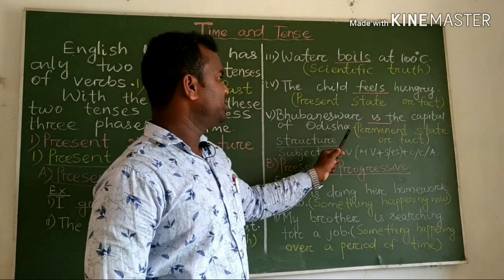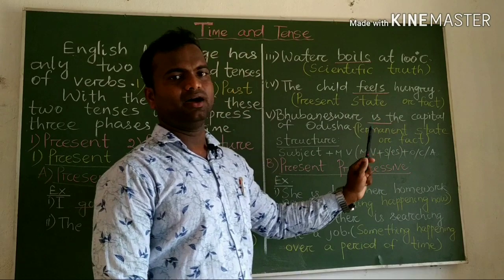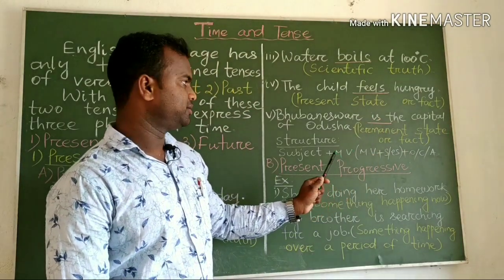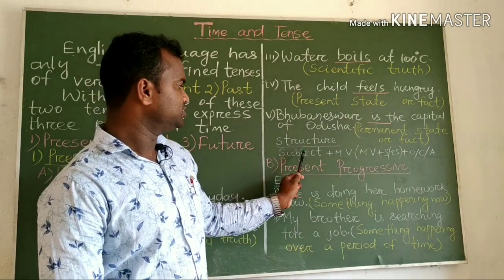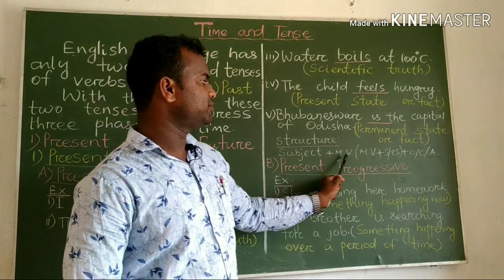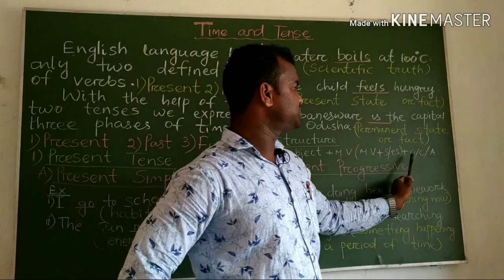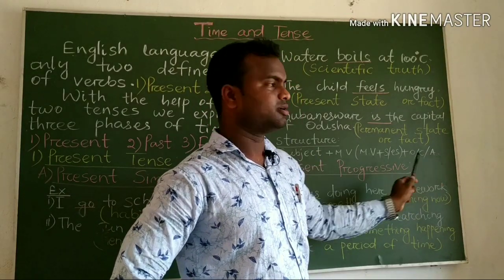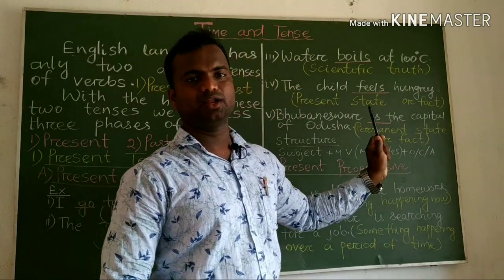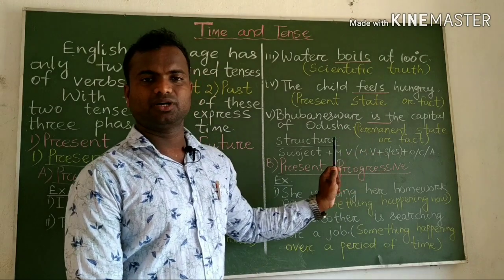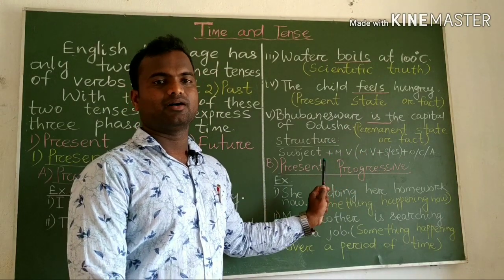The structure of present simple is: subject plus main verb (with S or ES) plus object or complement. The main verb takes S or ES when the subject is third person singular number.